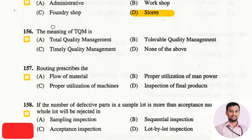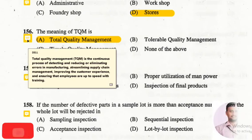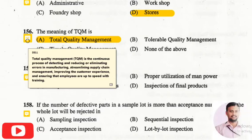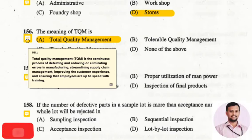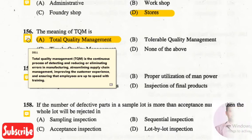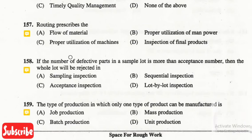The next question is: the meaning of TQM is? The right answer is total quality management, option one. Total quality management is a continuous process of detecting and reducing or eliminating errors in manufacturing, streamlining supply chain management, improving the customer experience, and ensuring that employees are up to speed with training.